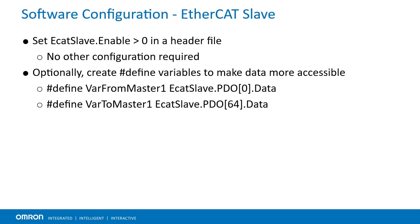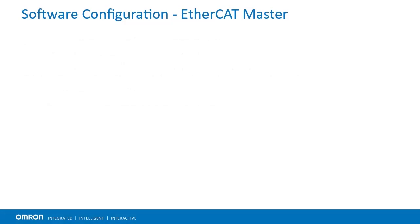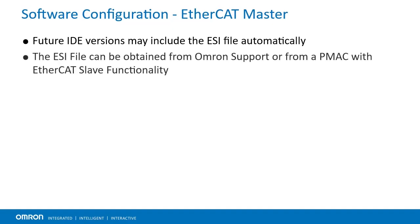Users can then create PLCs or other logic to copy data in and out of these registers. Configuring a master device to use PMAC as an EtherCAT Slave device is also fairly simple, as it is effectively the same as any other slave device. First, you will need to load your ESI file for the device. As of IDE version 4.5.2.9, it is not included by default, but the ESI file can be obtained by reaching out to your local OMRON support channel. It is also stored on the EtherCAT Slave device itself.